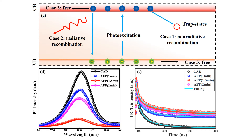This can also be explained with the TRPL data. If charges spend a longer time at those energy levels, they can be collected more easily. For the anti-solvent fumigation process for 1.5 minutes, shown in red, the time decay was higher compared to the CAD method. This shows we have a longer lifetime for photogenerated charges to be collected at the different surfaces.